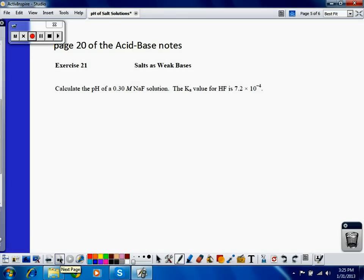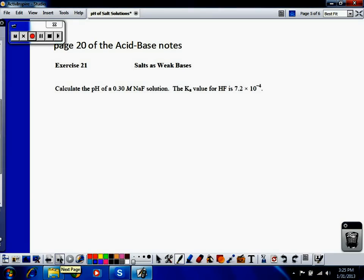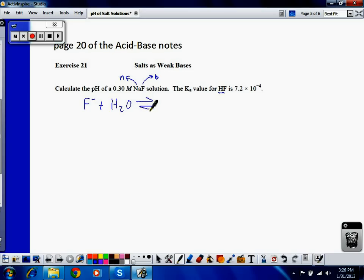In this question we want the pH of a 0.3 molar sodium fluoride solution. The Ka value for the conjugate acid HF is 7.2 times 10 to the negative 4th. When I look at this, sodium is neutral, fluoride is basic.